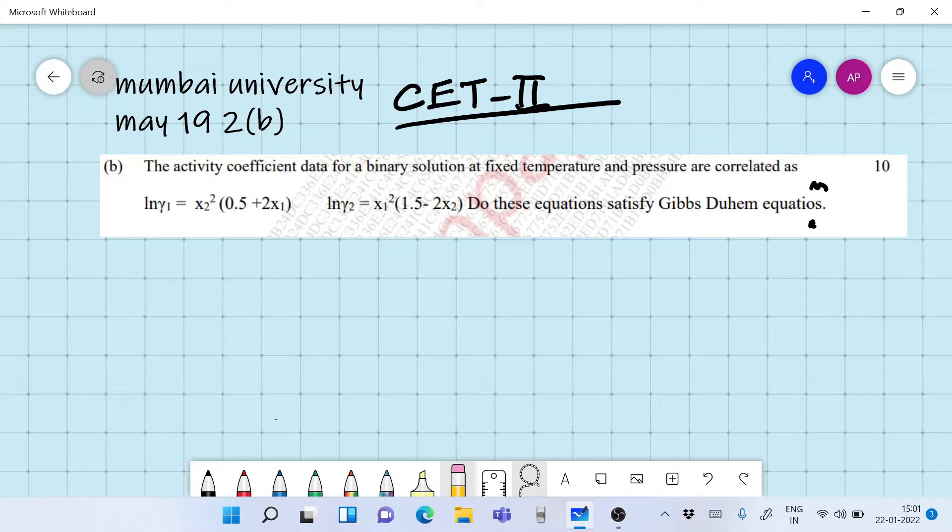The activity coefficient of a binary solution at fixed temperature and pressure are correlated as ln gamma 1 equals x2 square times 0.5 plus 2x1, and ln gamma 2 equals x1 square times 1.5 minus 2x2. Do these equations satisfy the Gibbs-Duhem equation? 10 marks.